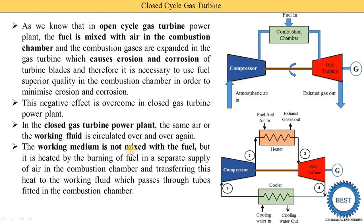The working medium is not mixed with the fuel, but it is heated by burning of fuel using a separate supply of air in the combustion chamber, and transferring this heat to the working fluid which passes through the tubes fitted in the combustion chamber. In a closed cycle there are four components, whereas in open cycle there are only three. In this combustion chamber in the open cycle, air and fuel are mixed — that is direct combustion. Here in a closed cycle, air or other working fluid is passed inside tubes in a heater or combustion chamber.